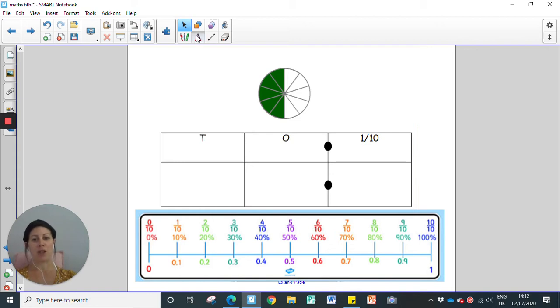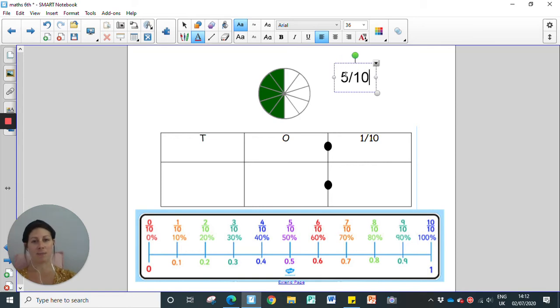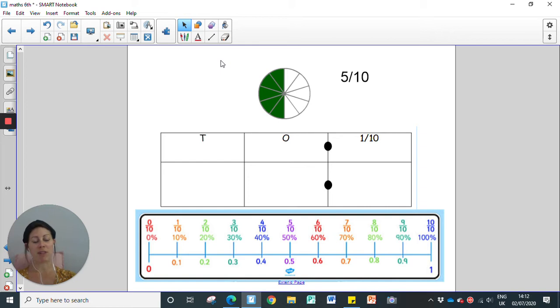So we could write that as a fraction, which would be five tenths. Okay, but what we want to do today is we want to represent our fraction, or our tenth, as a decimal. So if we have a look down here, you can see that we have our fractions, five tenths are parts of a whole, and here is five tenths, and then at the bottom this is how we would represent five tenths as a decimal.